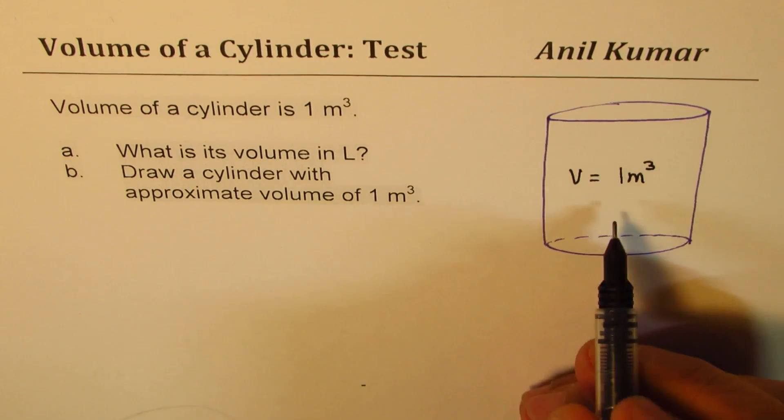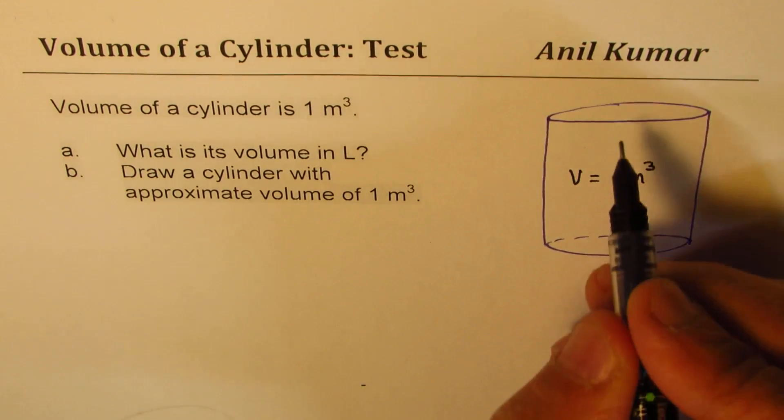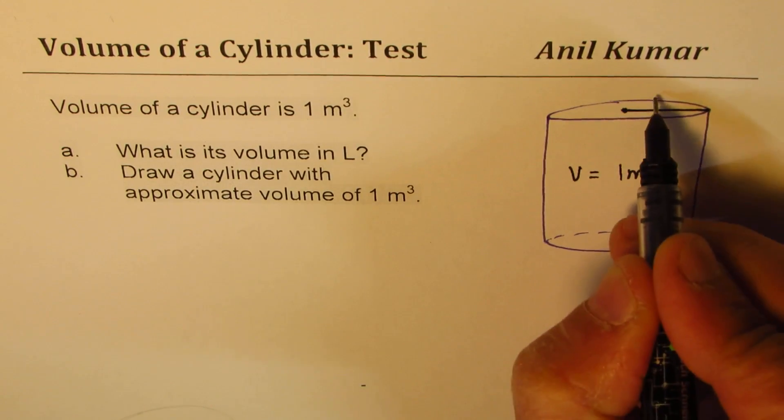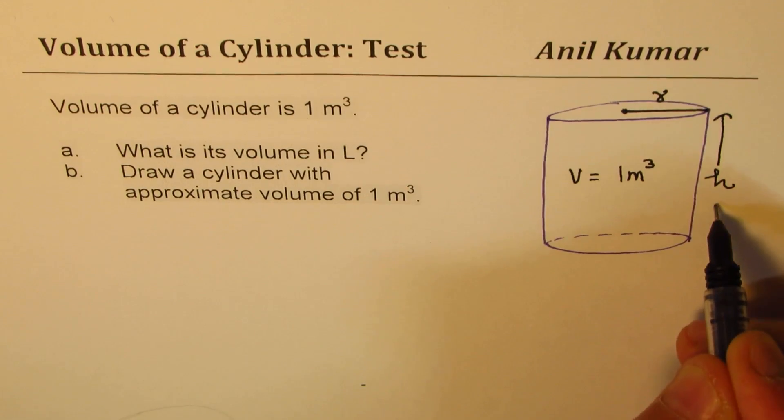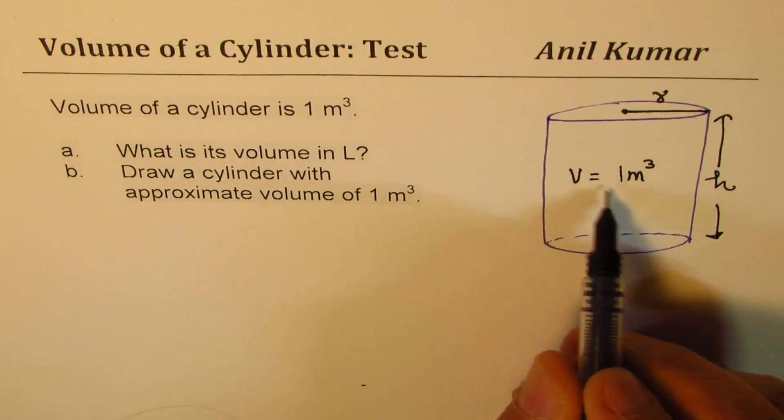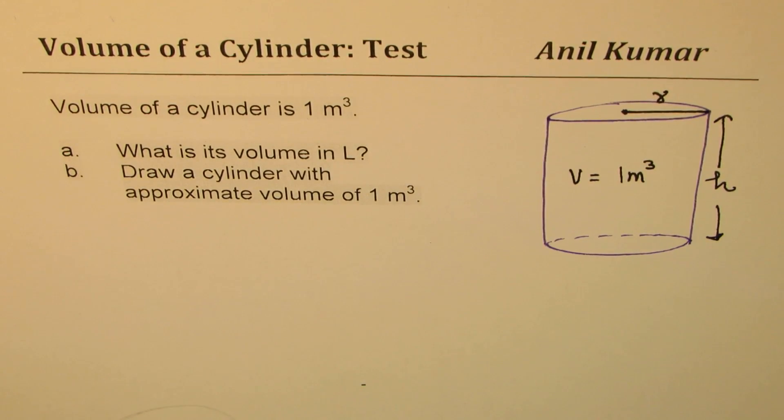So we say volume of this is one meter cube. So I'd like to figure out what is the radius R and what is the height of this particular cylinder so that we get approximately one meter cube of volume. So that's a question for you.